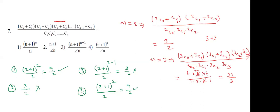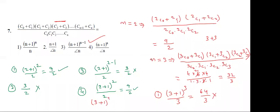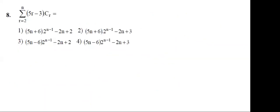I am going to verify the first option: (3+1) whole cube divided by 3 = 64/3. So this is wrong. The correct answer is the fourth option. Fourth option: (3+1)³ / 3! = 64/6 = 32/3. Yes, the fourth option is satisfied.